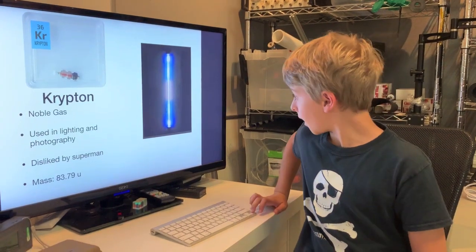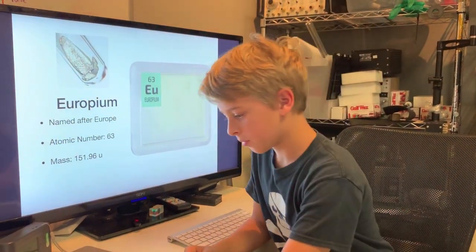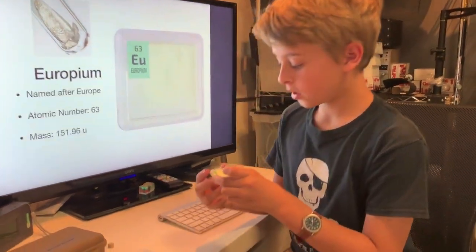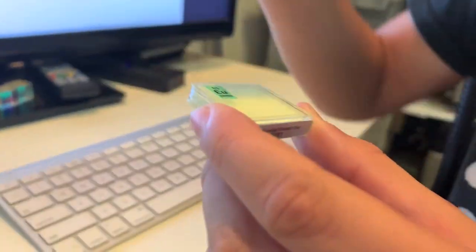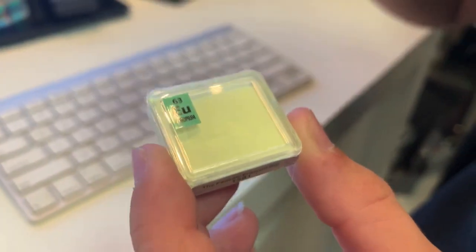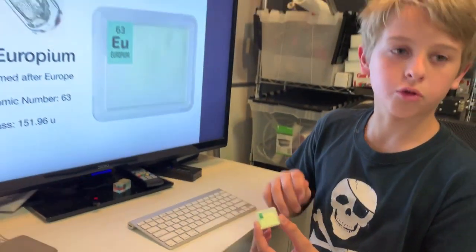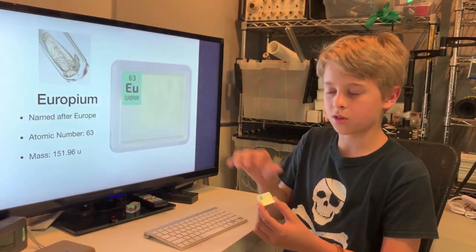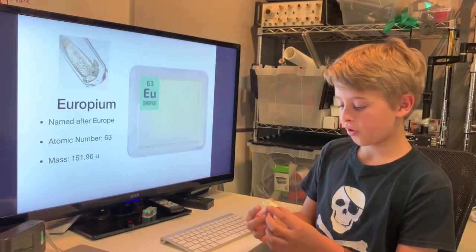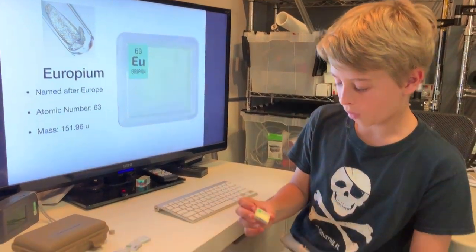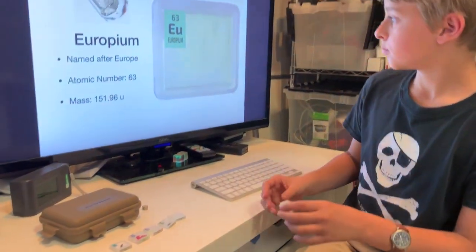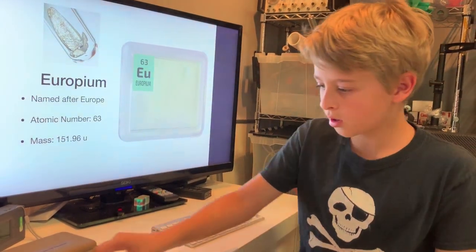Next up we have europium. Europium actually is not radioactive but what it does is it absorbs light and then slowly releases it once it's put in the dark. It is very interesting and it's right here in powder form. It was named after Europe because of its abundance there.